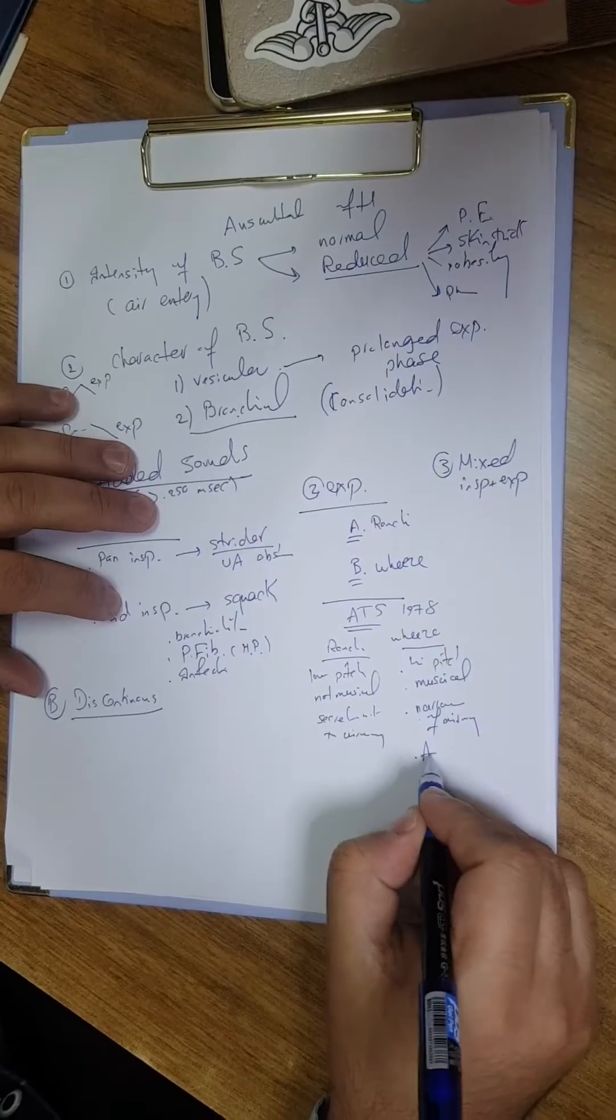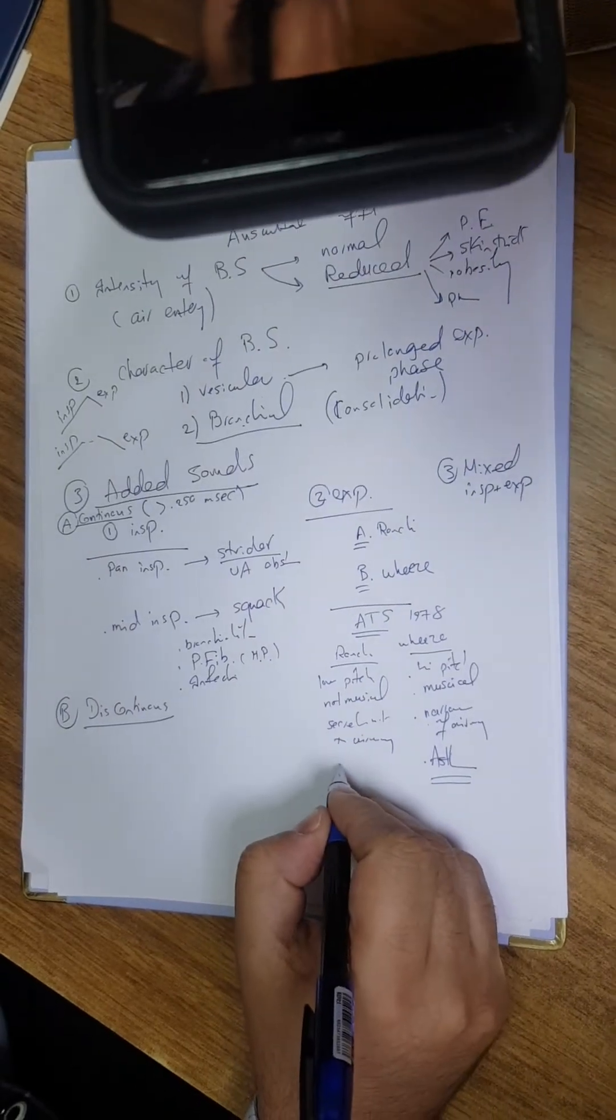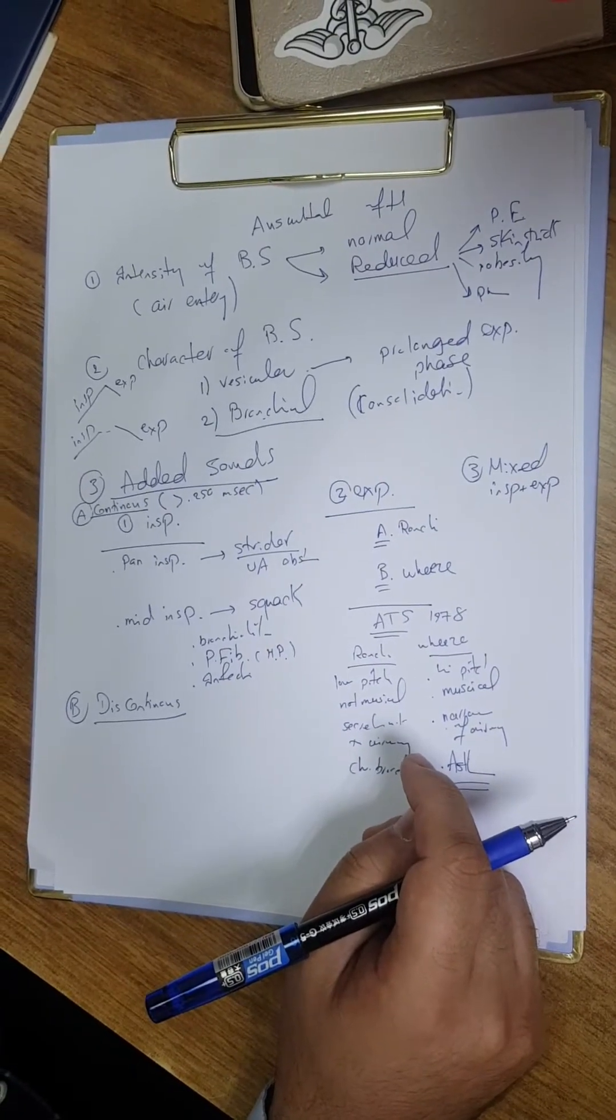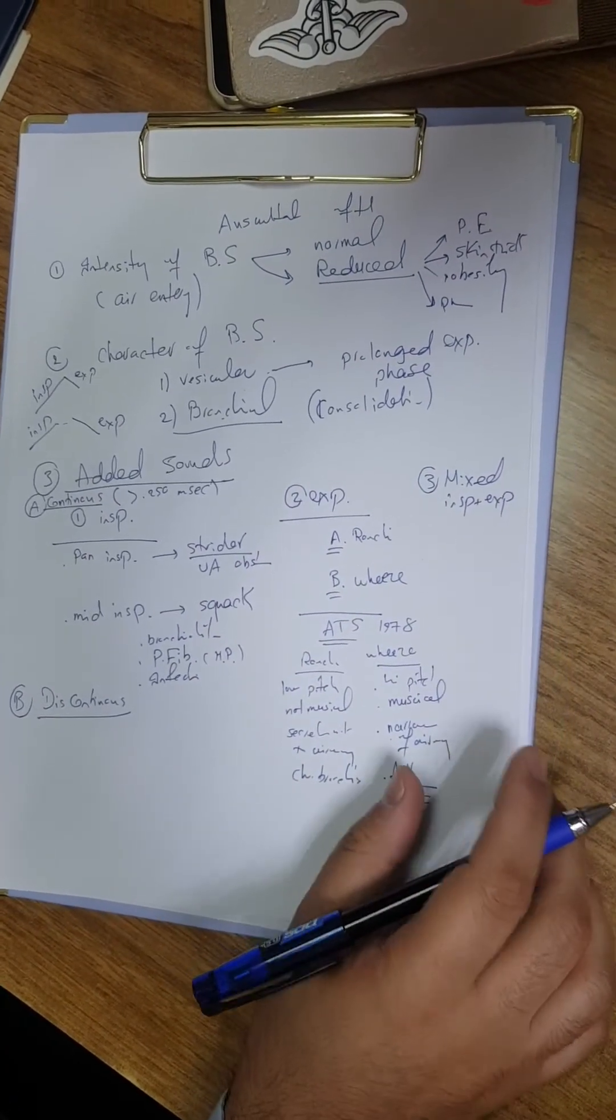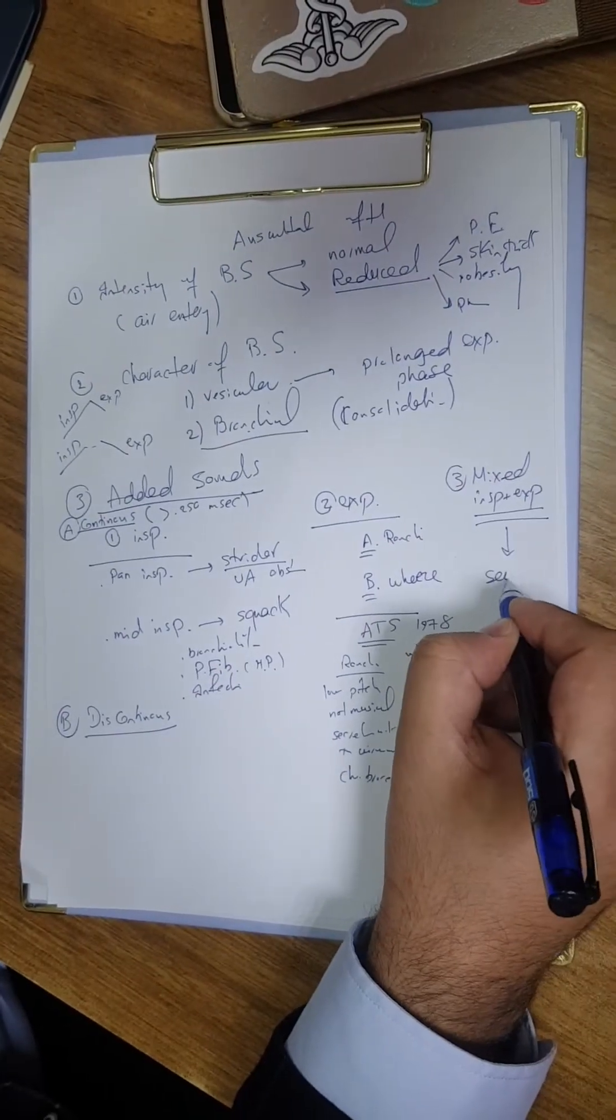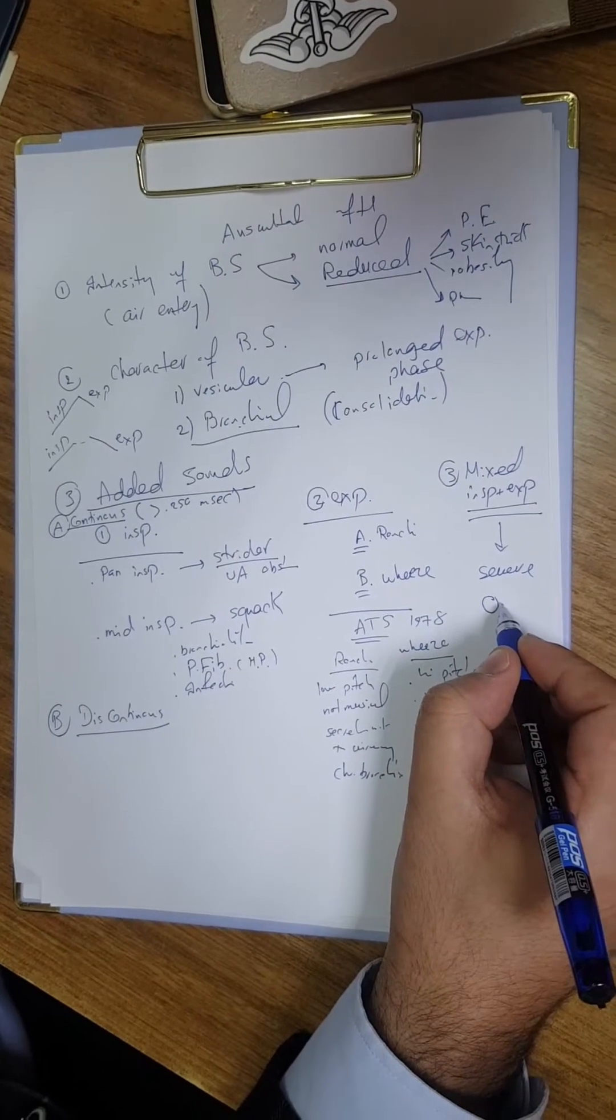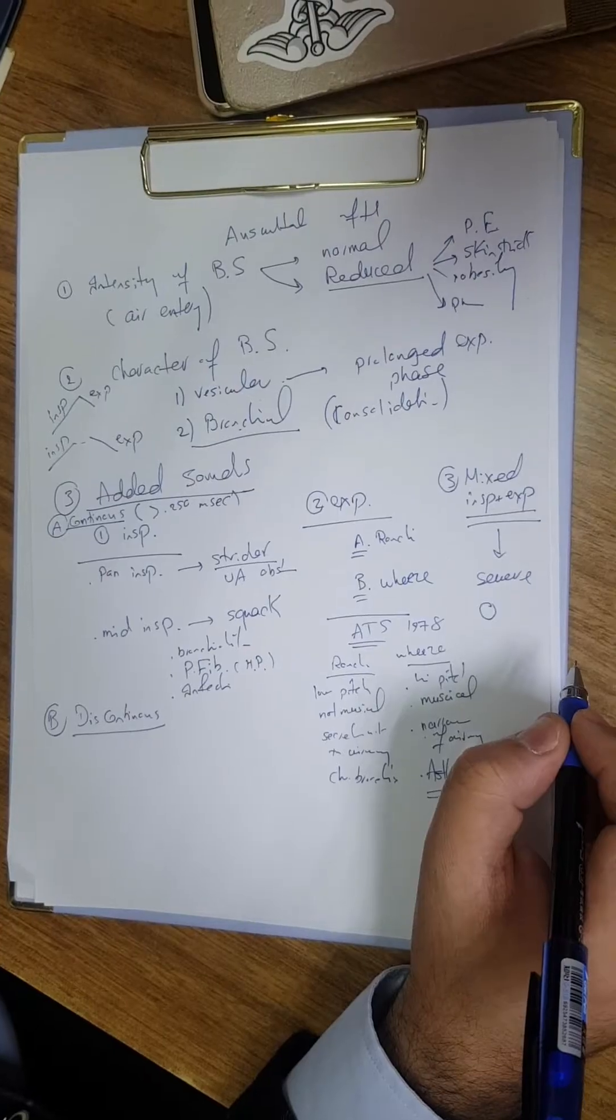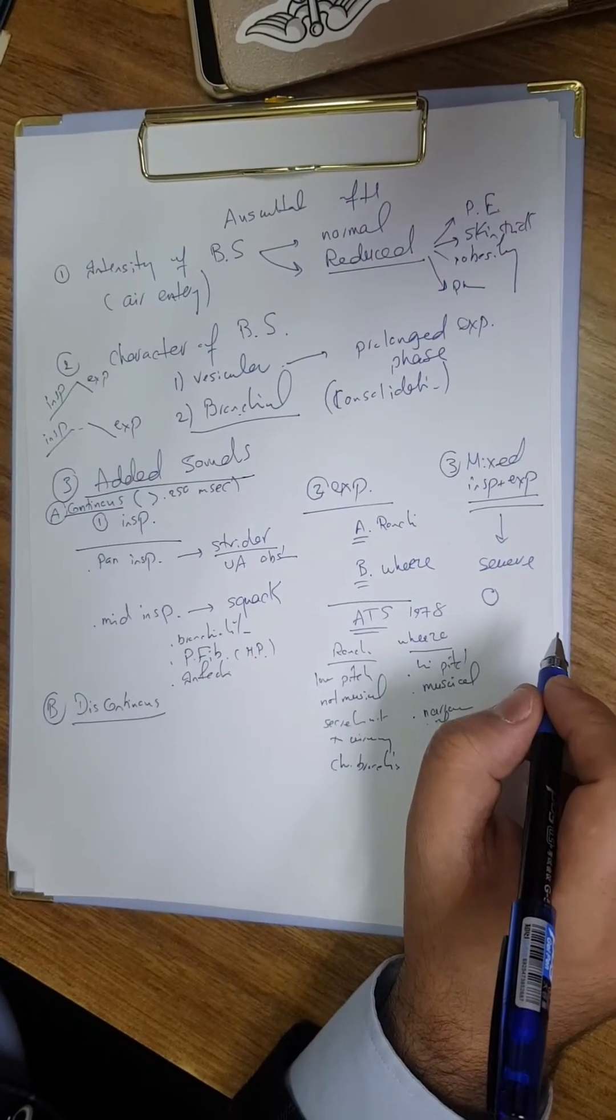The wheeze is the classical example in asthma - an asthmatic iconic musical sound. While ronchial is usually with chronic bronchitis. Both expiratory sounds can be inspiratory and expiratory in severe cases. If the patient is having expiratory sound that is continuous in inspiration, it means that we are having severe bronchoconstriction.